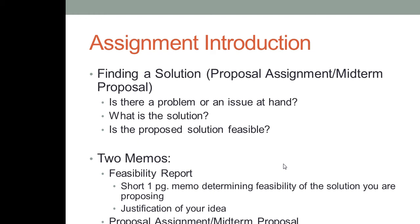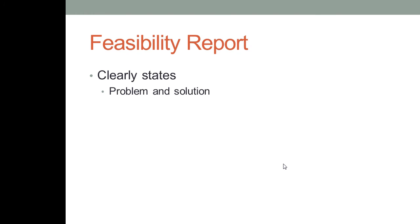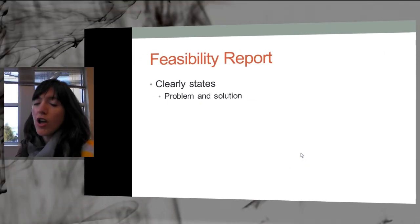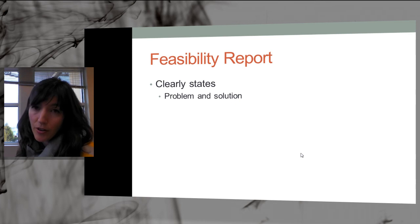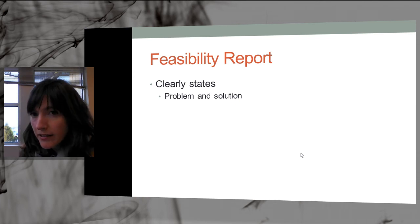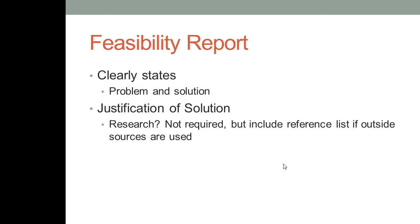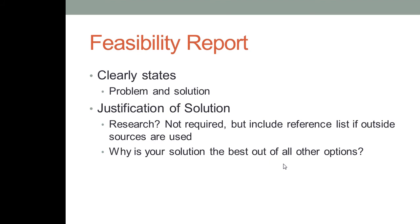When I say solution, it doesn't necessarily need to be a fix — it could just be a plan to make something better. The feasibility report will clearly state your problem and solution. Your job is to prove that your idea is feasible, that your proposed action plan will work. It's basically justification for your solution or your action plan. Research is not required for your feasibility report, but you might want to do some. You need to be proving why your solution is the best out of all the other options out there.